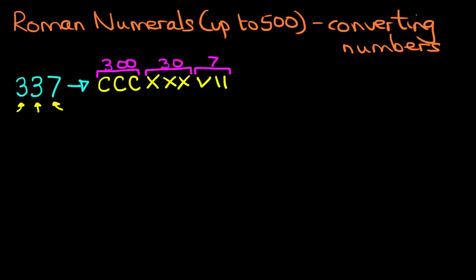So 337 in Roman numerals is C, C, C, X, X, X, V, I, I. It's very long, looks complicated, but it is very simple if you work through the formula which we're going through.